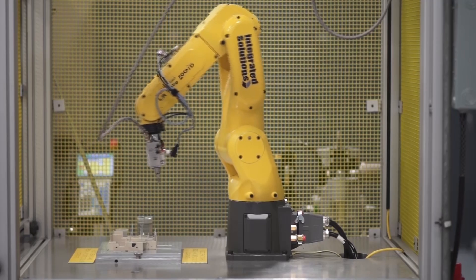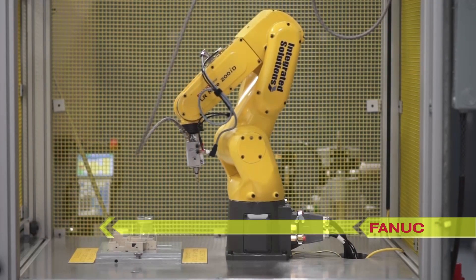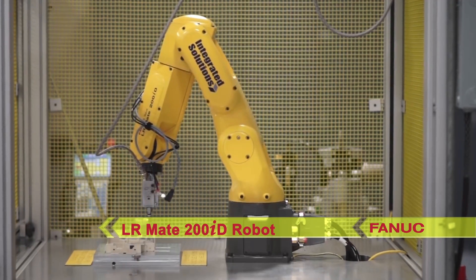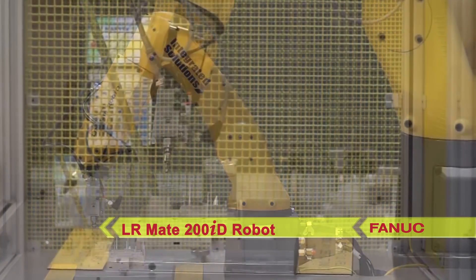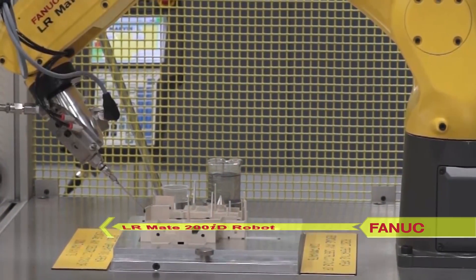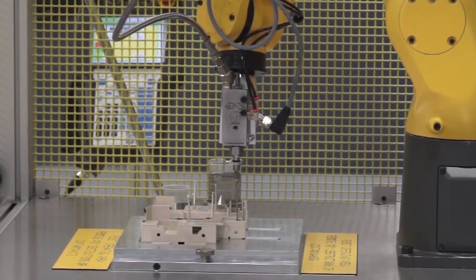The system utilizes Fanuc's versatile and compact LR Mate 200ID robot to dispense the silicone onto the parts, and the robot uses Graco pumping and dispensing equipment to dispense.